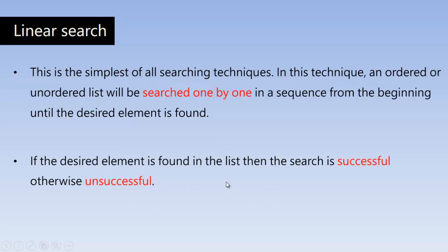If the desired element is found in the list then the search is successful otherwise it is unsuccessful. Since the time complexity of linear search is O(n), it increases with the time. In the best case we will get the search element in the beginning. In the worst case we will get the element at the last position or nowhere at all.